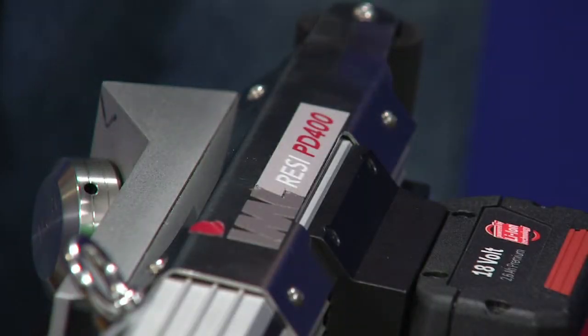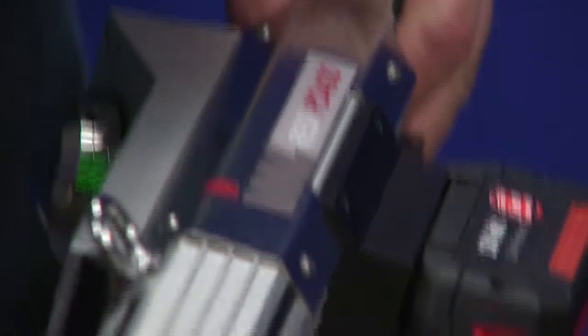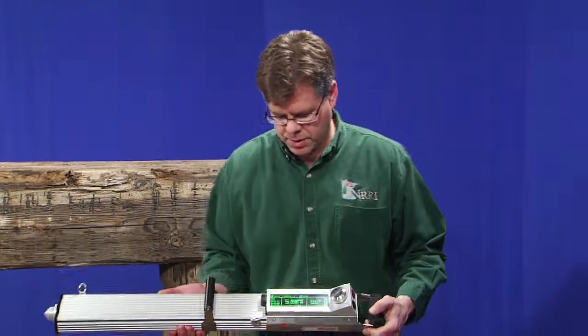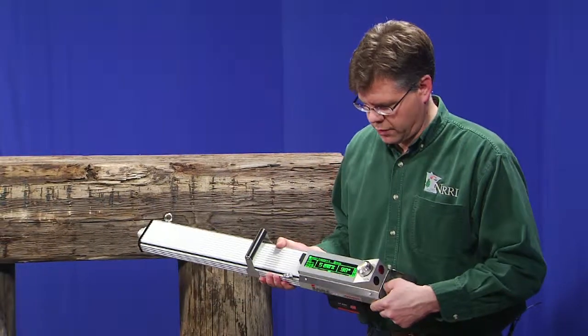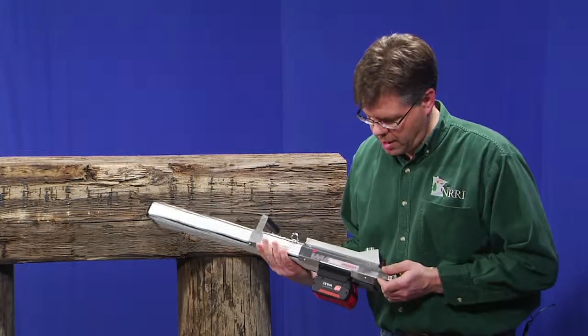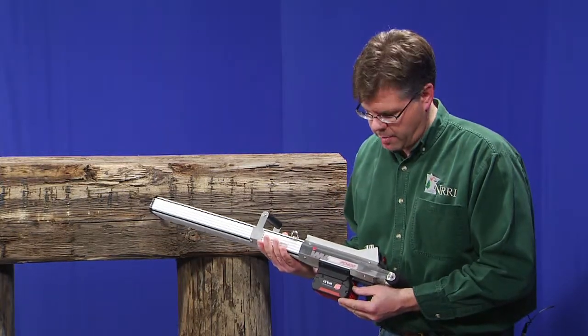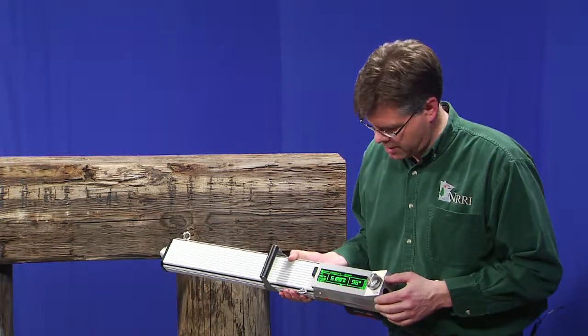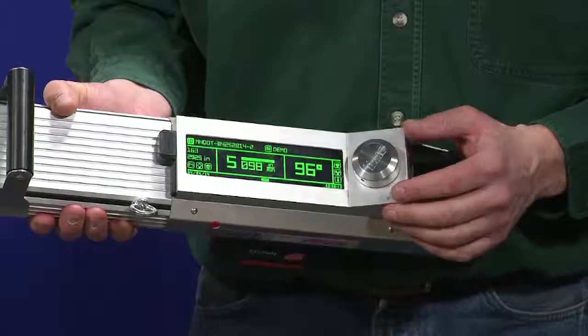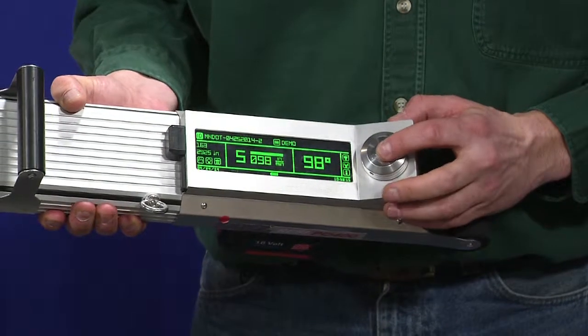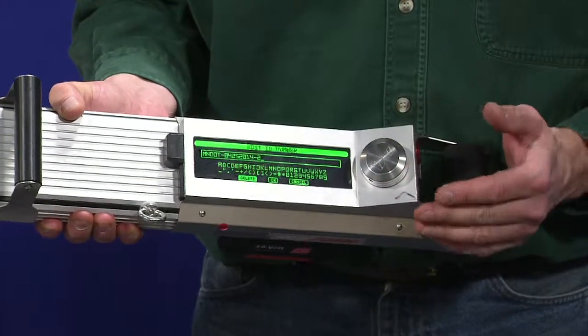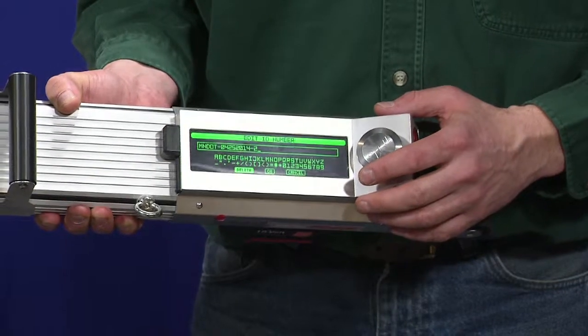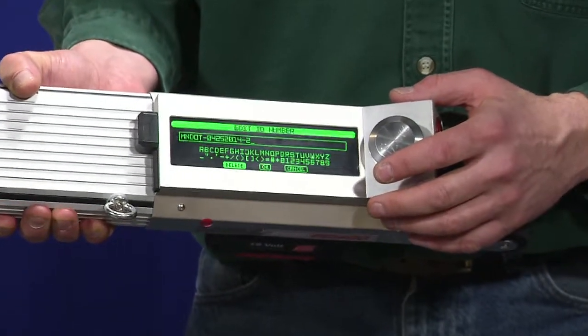The second drill we're going to demonstrate is also manufactured by IML, and this is a newer version that uses an electronic drilling control system. As you can see, all of these units are battery powered in one fashion or another. On the display unit, there's a number of options available. Each inspector can specifically put the bridge number and the drilling number as part of their data collection process.